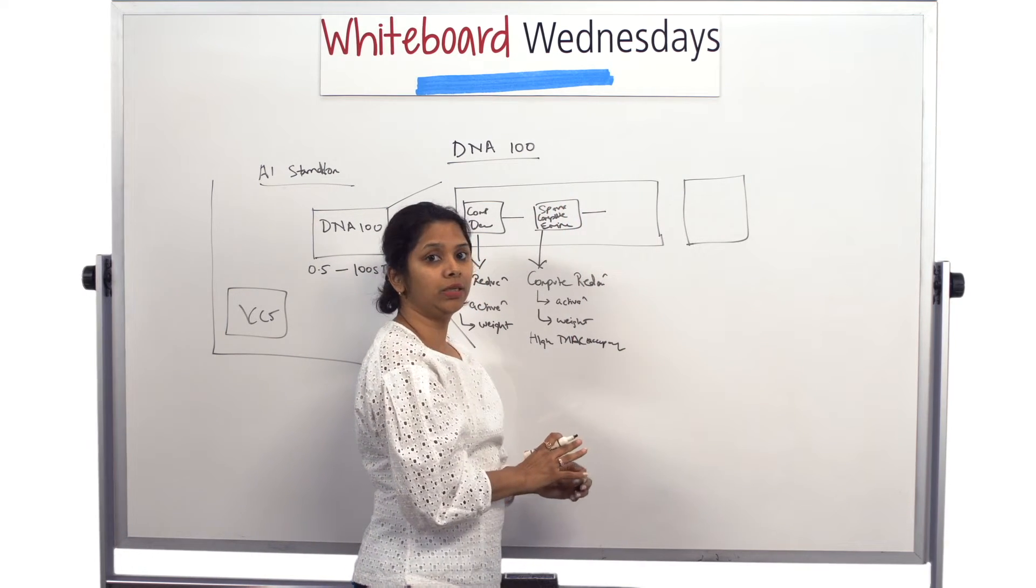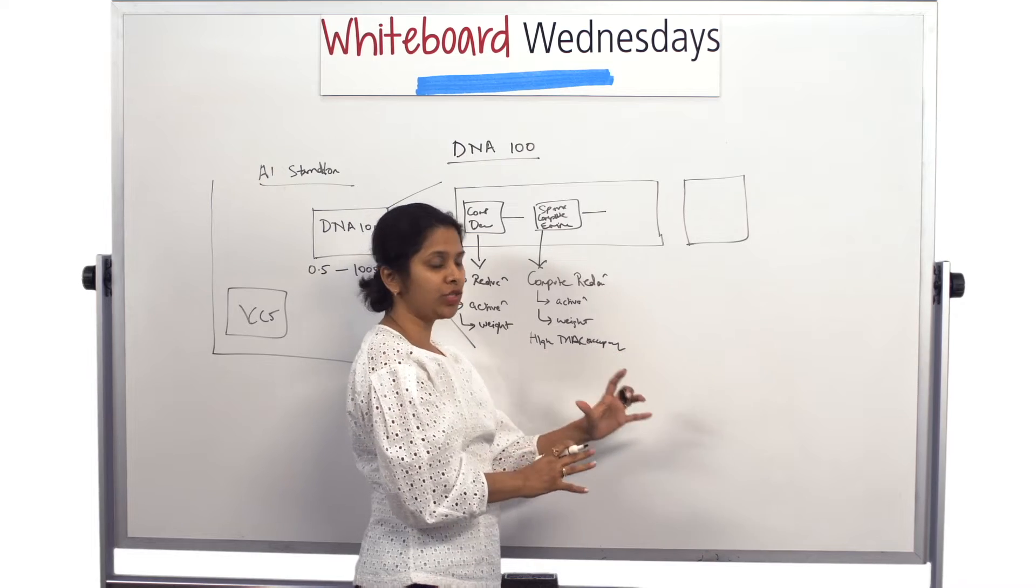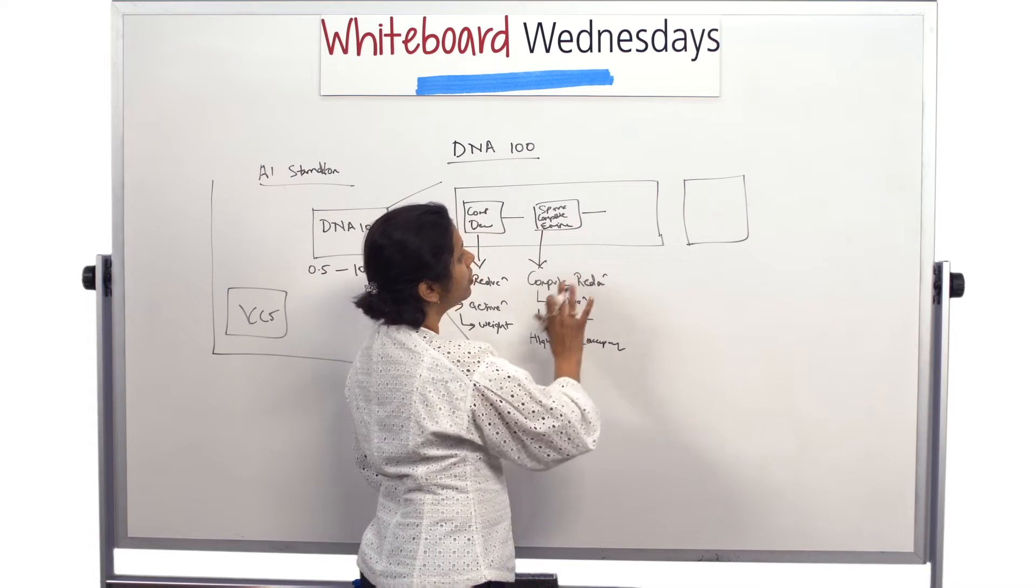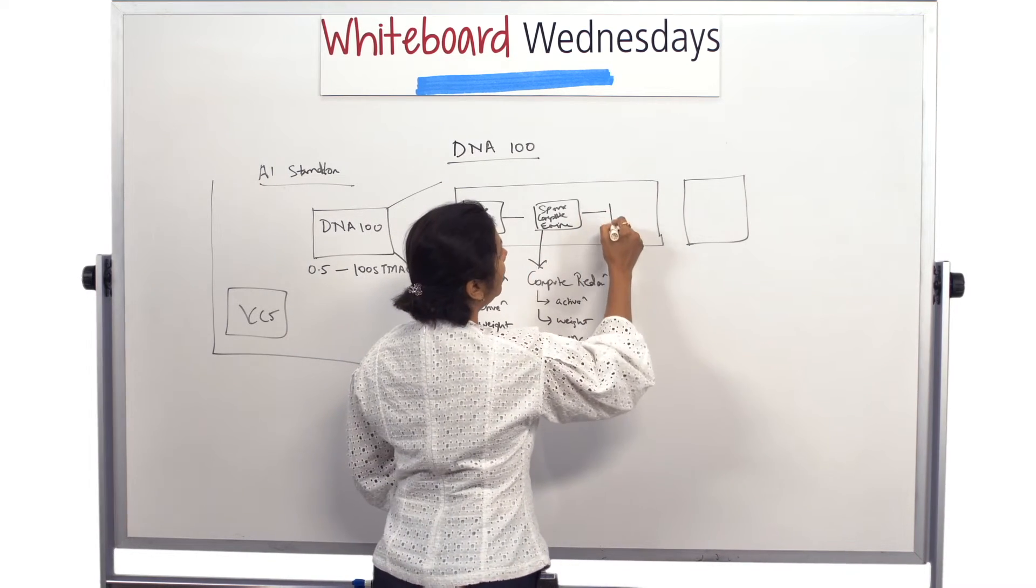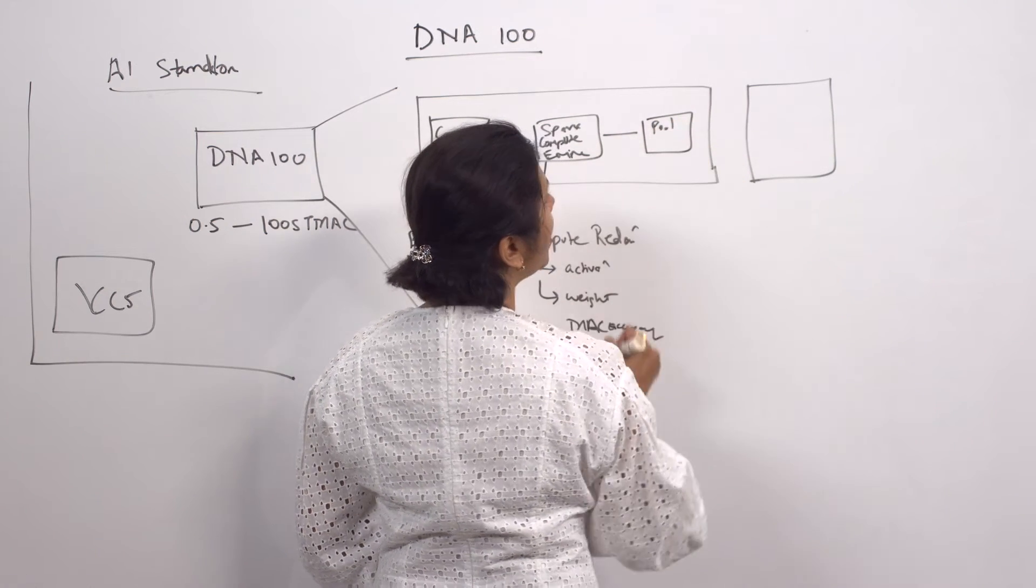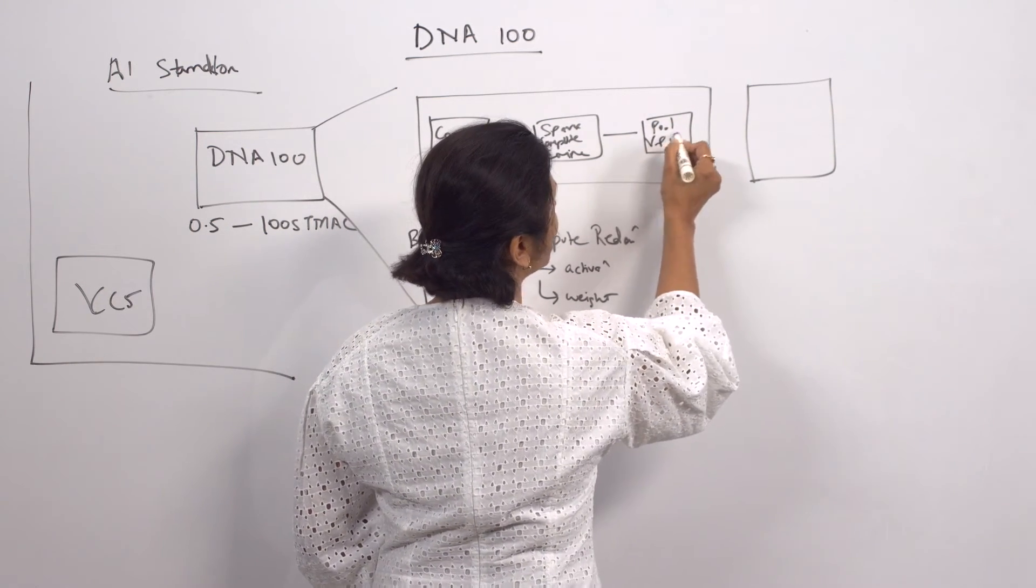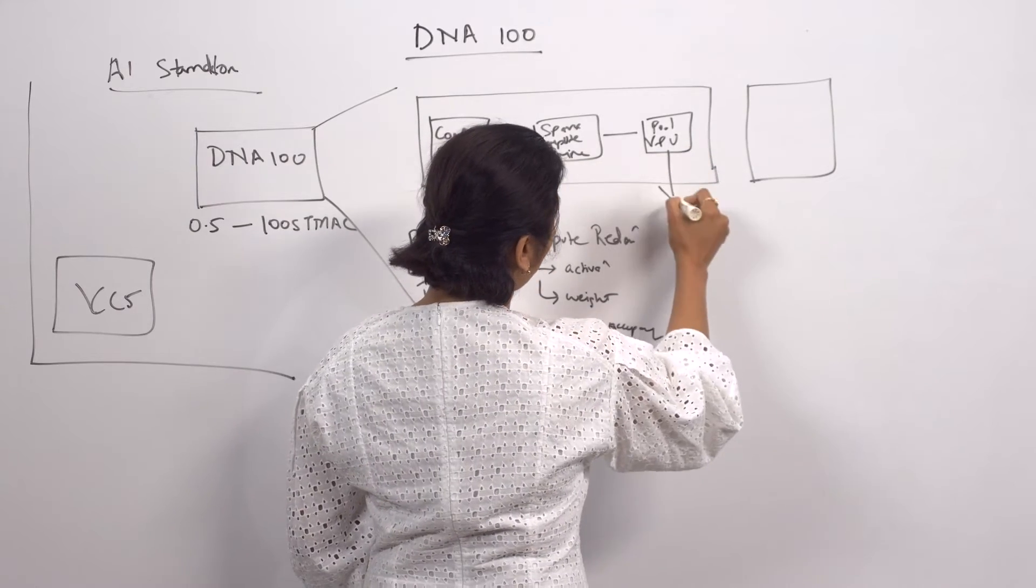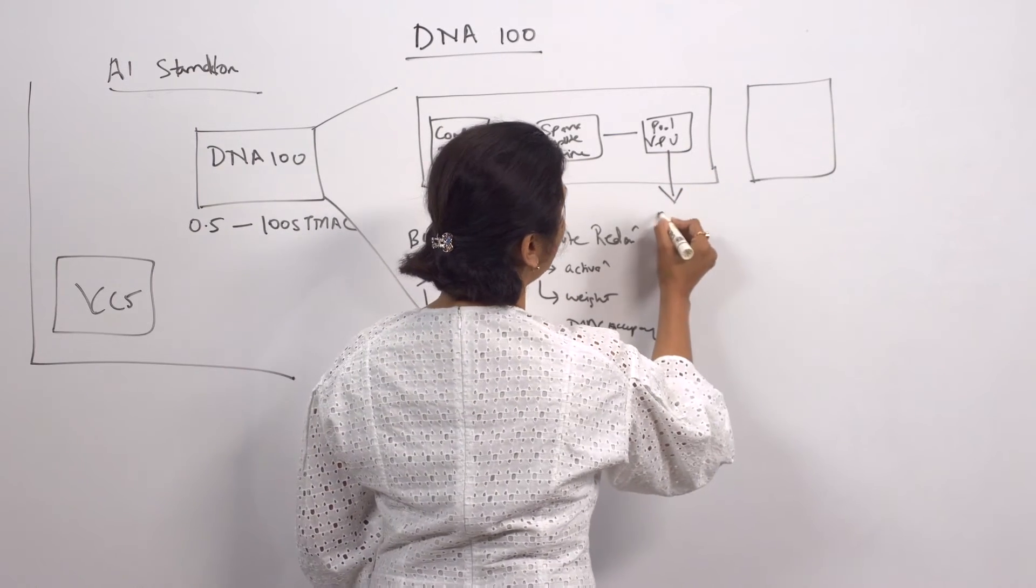Once it's done with all the computation it goes through the quantization phase, which I'm not showing over here. Once the quantization phase is done it will go into the non-convolution phase where we have a pooling block and a vector processing unit.